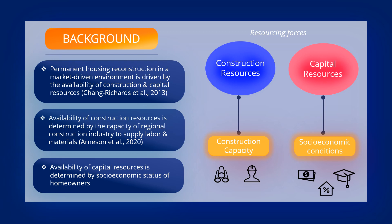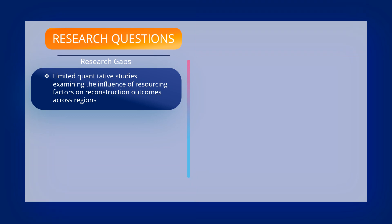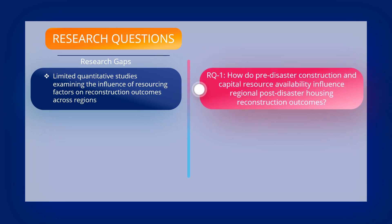These resourcing forces are composed of multiple factors, called the resourcing factors, which can be tracked and measured to assess construction and capital resource availability. Despite the critical role of resource availability, there is a lack of quantitative studies to understand how resource availability influences housing reconstruction outcomes at a regional scale. We address this gap with our first research question: How do pre-disaster construction and capital resource availability influence regional post-disaster housing reconstruction outcomes?